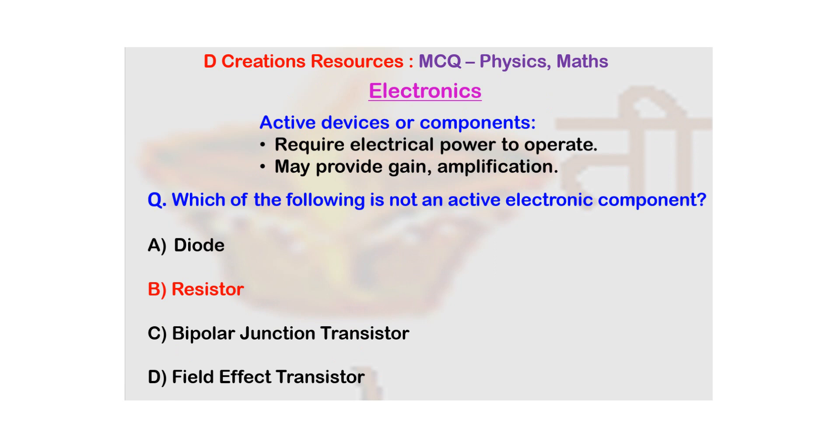So amongst all the devices that you see here, for example, diode, bipolar junction transistor, field effect transistor, all of them require electrical power to operate. But resistor is one component which does not require electrical power to operate, nor does it provide any kind of amplification.